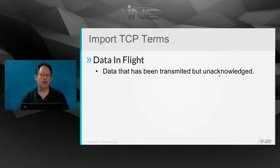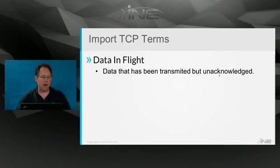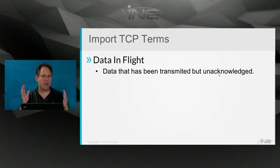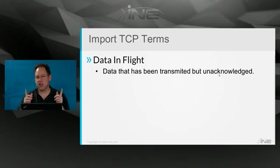There are some important terms we need to know regarding data in flight — also sometimes referred to as bytes in flight — which is simply bytes or data that has been transmitted but not yet acknowledged. TCP has a maximum quantity of bytes that can be in flight, and that is controlled by two different variables.